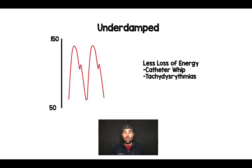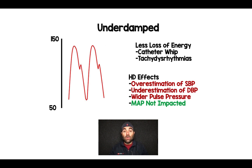In an under-damped waveform, you're going to have less loss of energy. Things like extreme hypertension that cause the catheter to whip around can cause artifact on the A-line. And tachydysrhythmias, where the heart rate is going way too fast, can also cause an under-damped A-line. The hemodynamic effects here are going to be that you overestimate your systolic blood pressure, you underestimate your diastolic blood pressure, and you have a much wider pulse pressure. But again, your MAP will not be impacted.